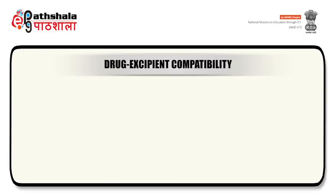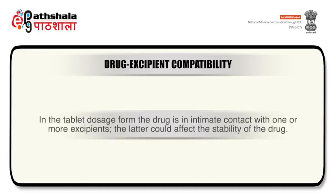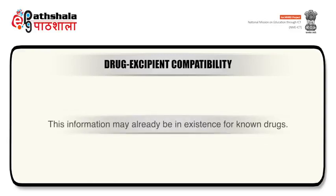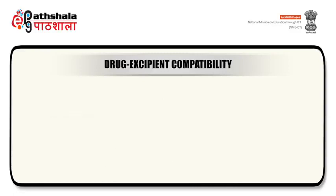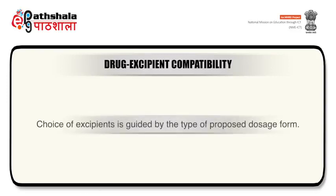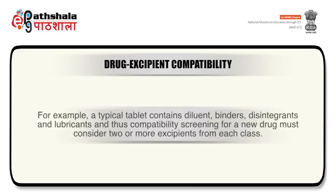After solution and solid state stability, drug excipient compatibility also plays a major role. In the tablet dosage form, the drug is in intimate contact with one or more excipients, which could affect the solubility of the drug. Knowledge of drug excipient interactions is therefore very useful to the formulator in selecting appropriate excipients. For new drugs or new excipients, the pre-formulation scientist must generate the needed information. Choice of excipients is guided by the type of proposed dosage form. A typical tablet contains diluents, binders, disintegrants and lubricants, and thus compatibility screening for a new drug must consider two or more excipients from each class.